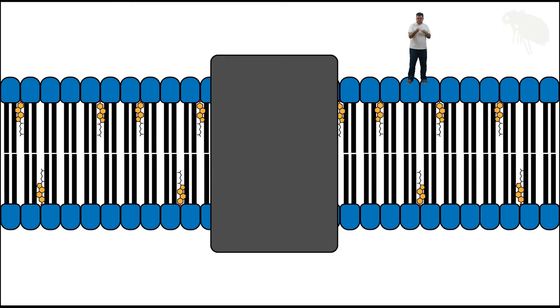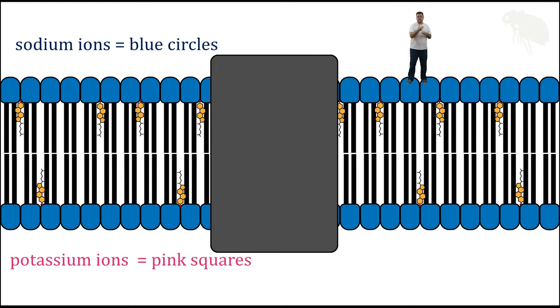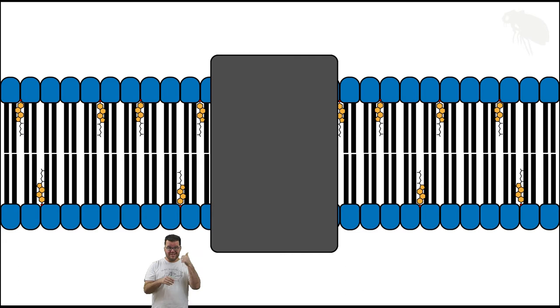Also know what you're looking for in the ions in this video. Sodium will be blue circles, potassium will be pink boxes or pink squares. And then finally, just remember sodium is concentrated on the outside of the cell and potassium on the inside. That's also important to understanding the process.